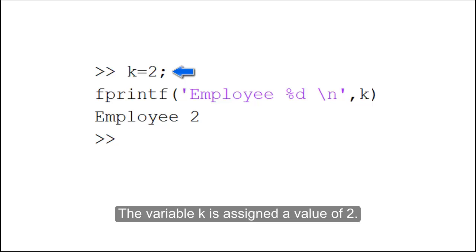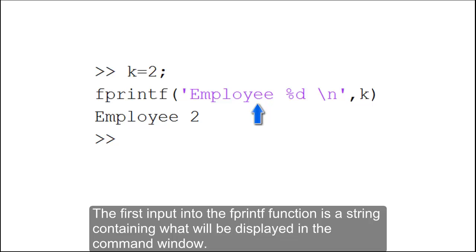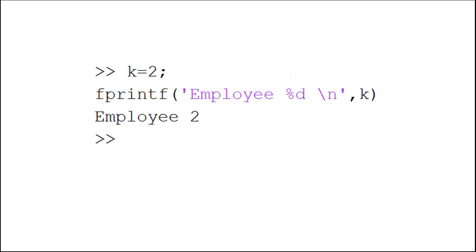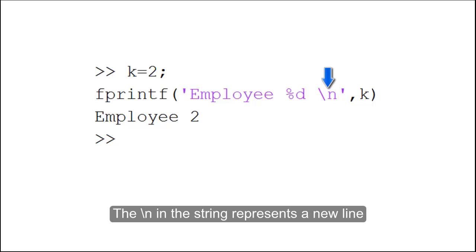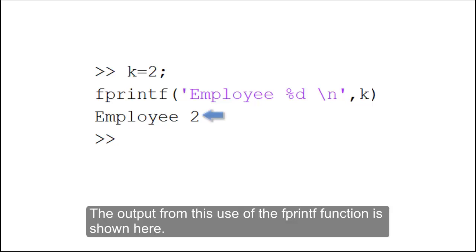The variable k is assigned a value of 2. The first input into the fprintf function is a string containing what will be displayed in the command window. The %d in the string represents decimal notation, and the backslash n represents a new line. The second input assigns the decimal in the string the value of k. The output from this use of the fprintf function is shown here.